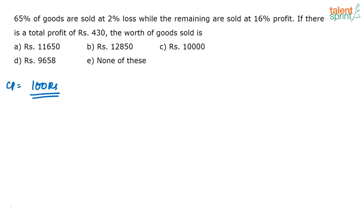If the total cost price is 100 rupees, then 65% of the goods are sold at 2% loss. The cost of 65% of the goods is going to be 65 rupees. I am going to sell these at 2% loss. What is 2% of 65? 1% of 65 is 0.65, so 2% of 65 is?